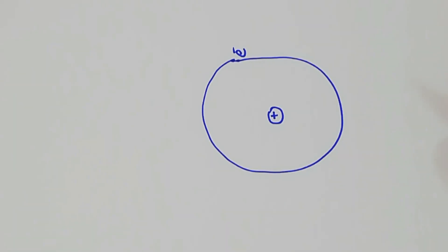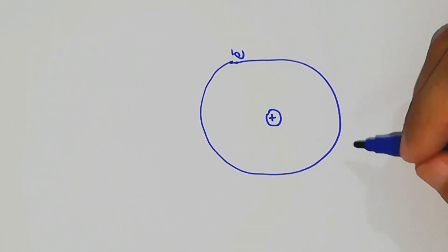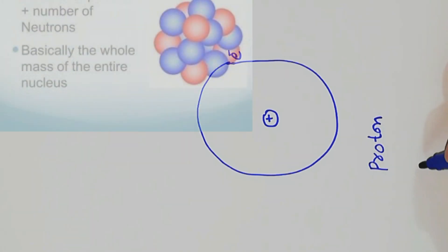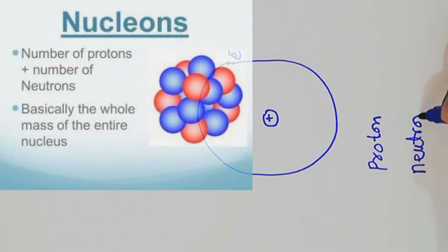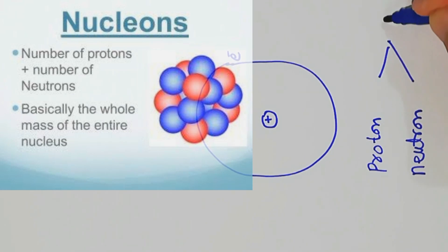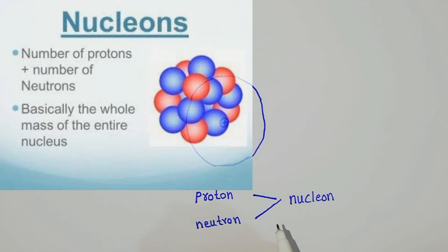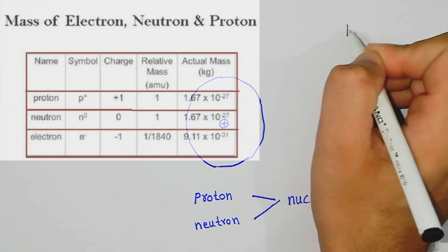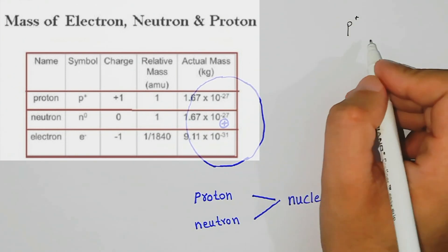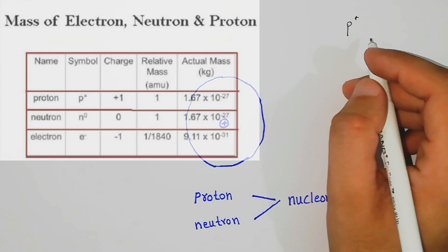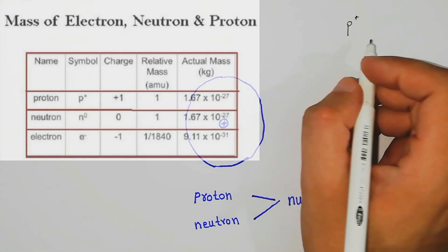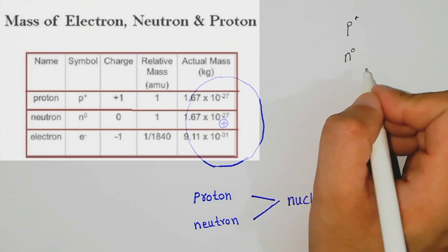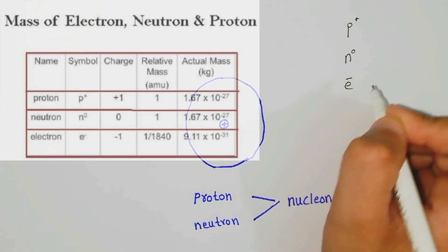In the center of an atom, in the nucleus, there are protons and neutrons, collectively called nucleons. The symbol of a proton is P with a positive charge. The neutron has no charge and is represented accordingly, and the electron has a negative charge and is represented by its own symbol.